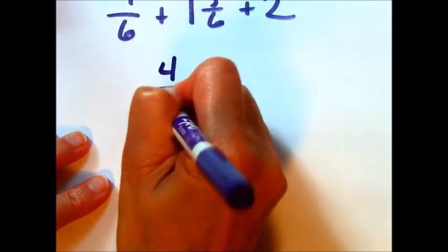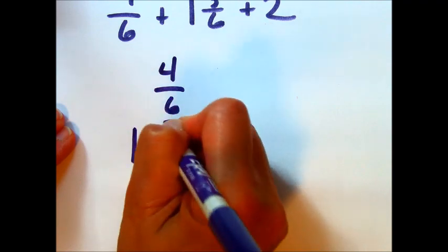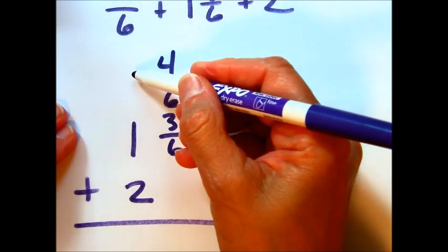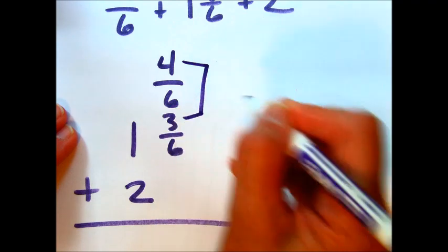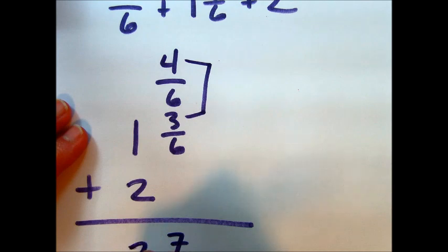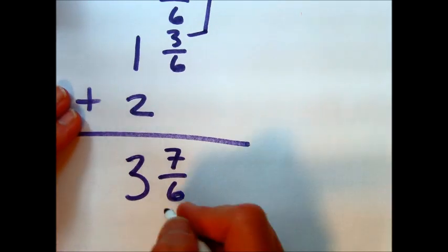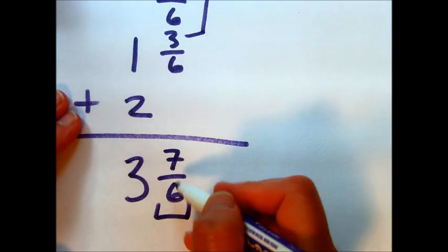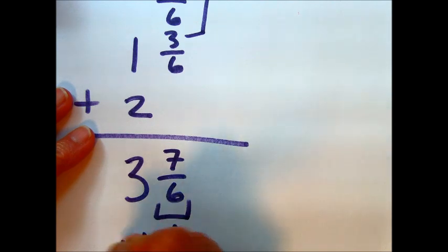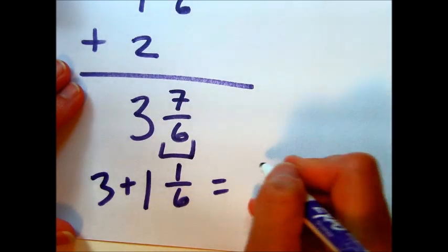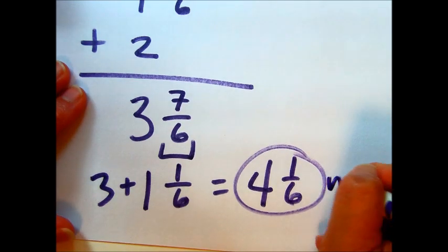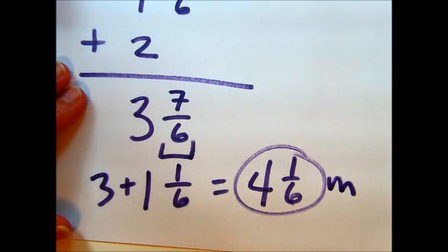This one doesn't have a whole number. If we just focus on the fractions, we're going to take these two and add them up. We get 7/6. 1 plus 2 is 3. So 3 7/6. Again, this part is improper. How many times does 6 go into 7? It goes in one whole time. So 1 1/6 plus the 3 is going to give us 4 1/6. And I think it was in meters. So perimeter is 4 1/6 meter.